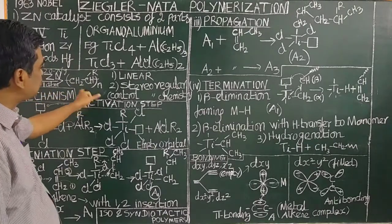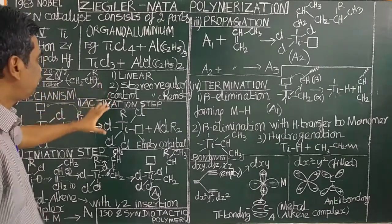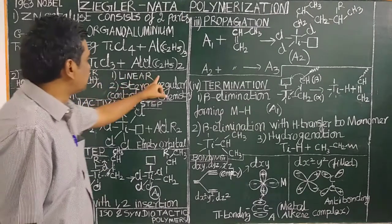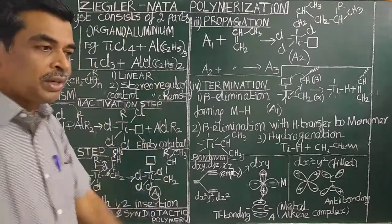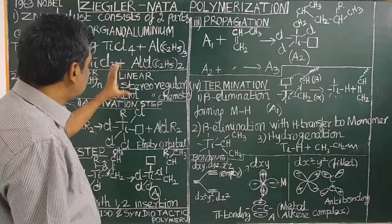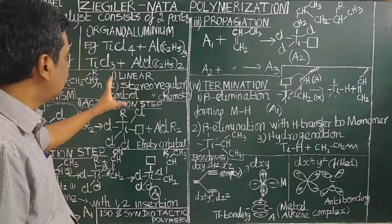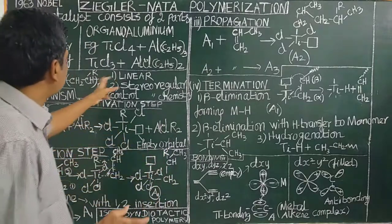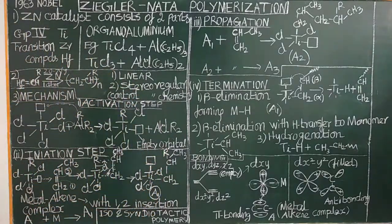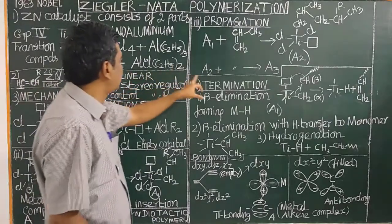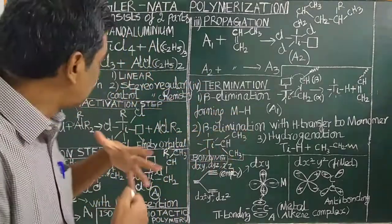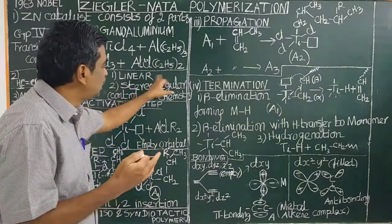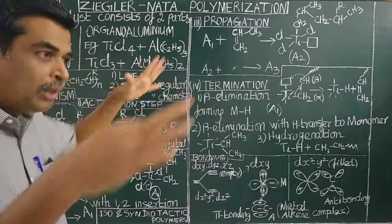The reaction gives polypropylene. In Ziegler-Natta polymerization, linear polymers of high molecular weight are formed. In contrast, free radical polymerization gives branched polymers with a broad distribution of molecular weight.